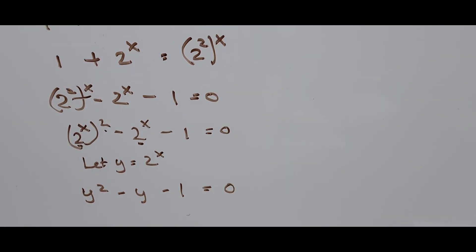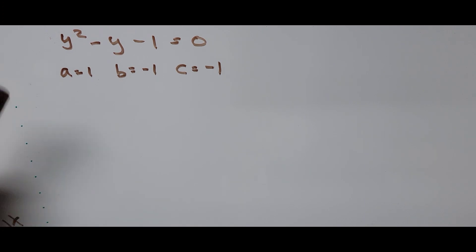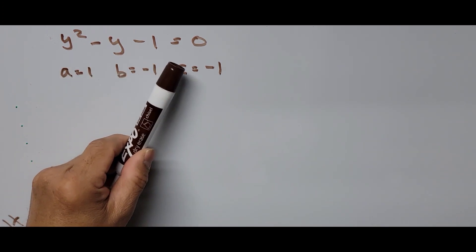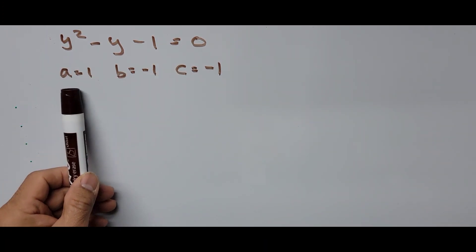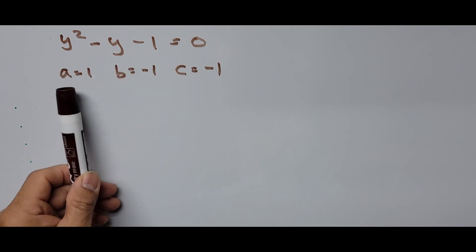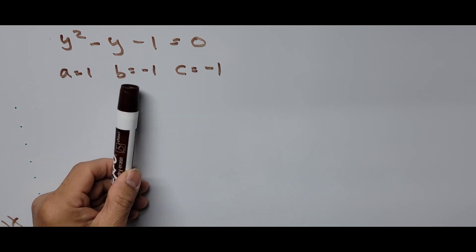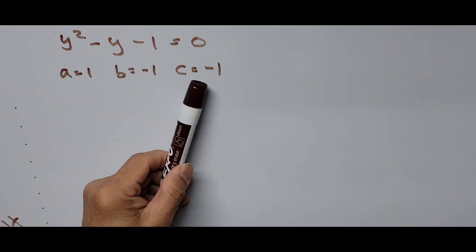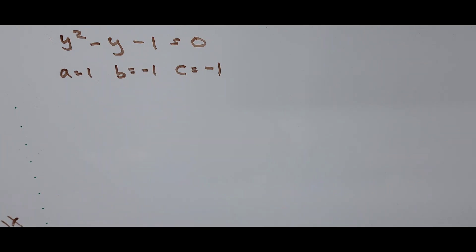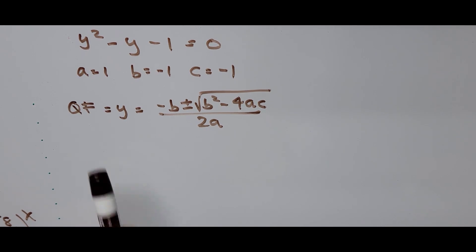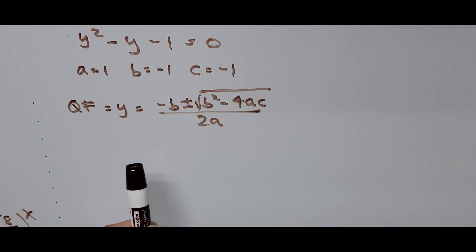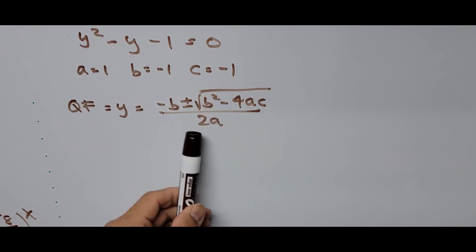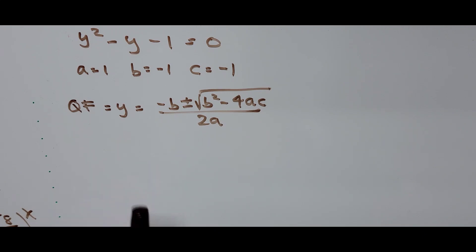We get the value of y by using the quadratic formula. The equation is y² minus y minus 1 equals 0, with coefficients: a is 1, b is negative 1, and c is negative 1. We have the quadratic formula, and we substitute the values of a, b, and c into it to solve for y.